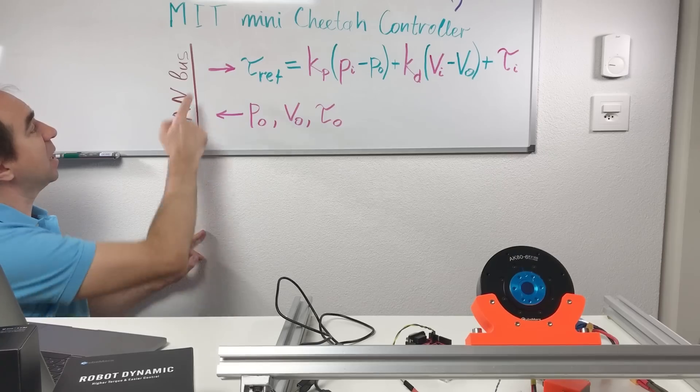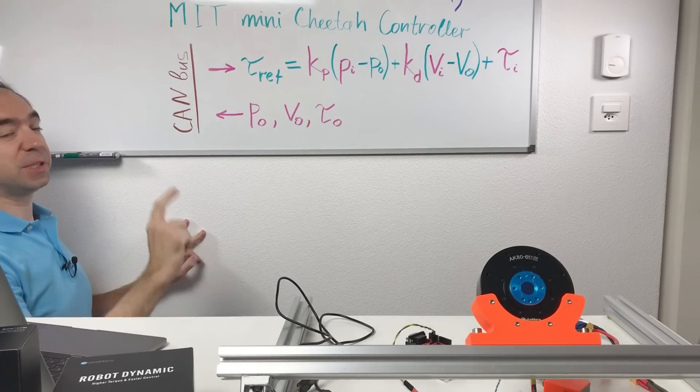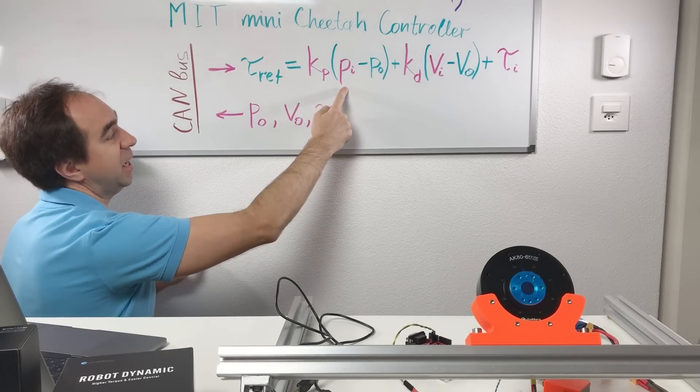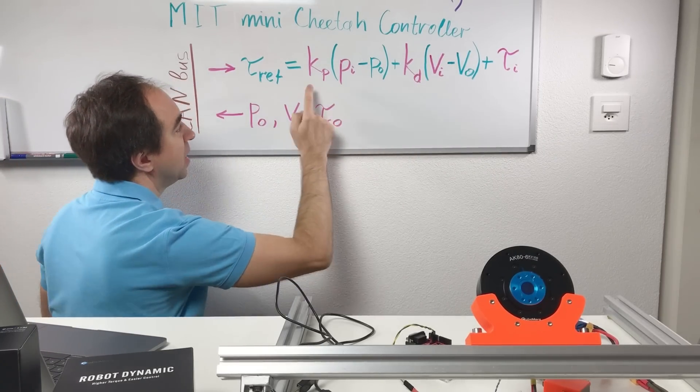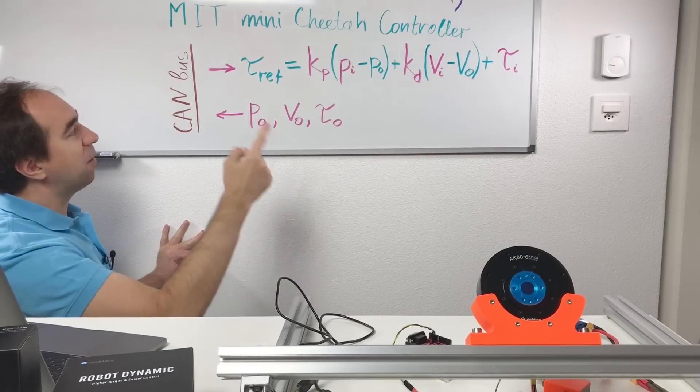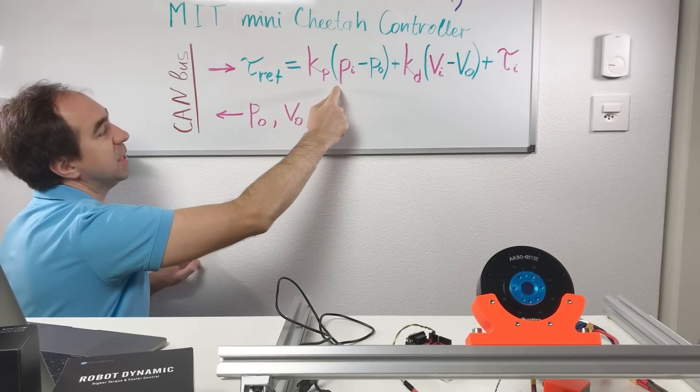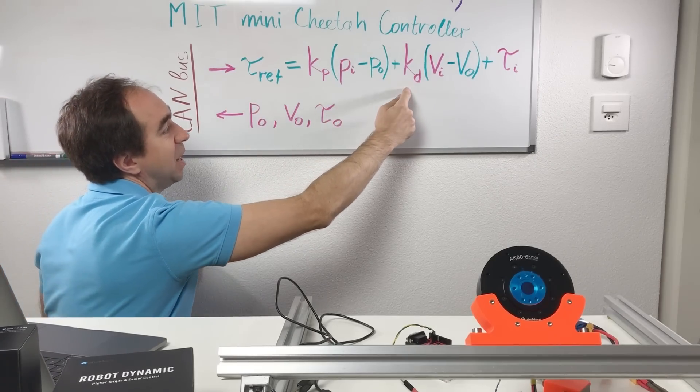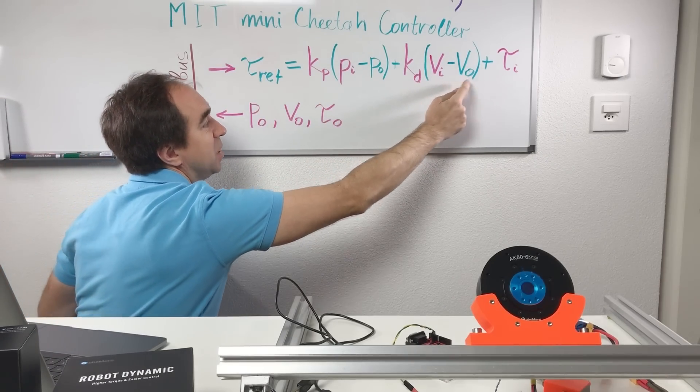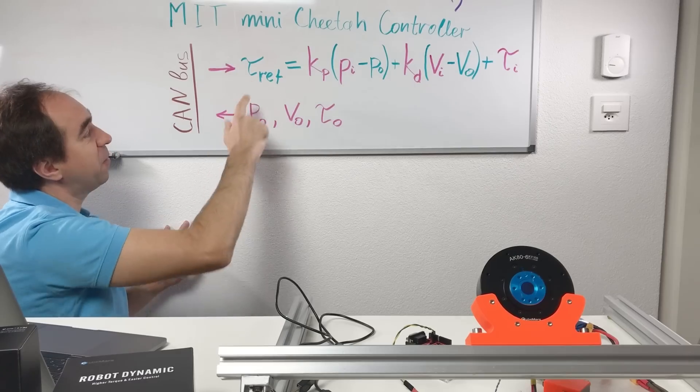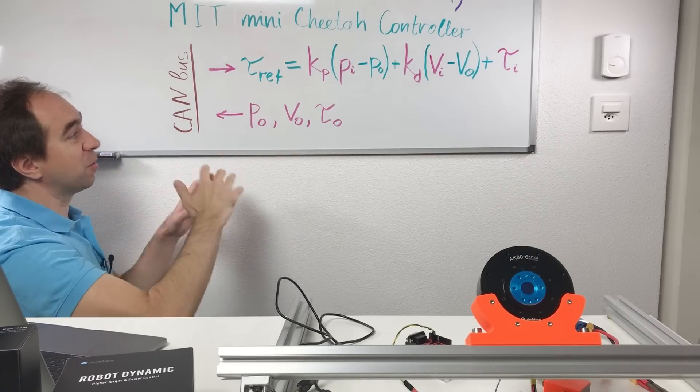The CAN bus communication is super simple. You need to send the desired position, speed, torque, stiffness, and damper. And afterwards, the controller calculates the reference torque, which is the stiffness times error in the position, plus damper times error in the speed, plus the torque. And this reference torque is used inside the controller for the control.